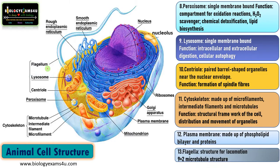The final structure is the flagellum. In many eukaryotic cells — often single-celled eukaryotes — a flagellum is used for movement. It is a structure meant for locomotion and has a 9+2 microtubule organization. Notably, flagellum, lysosome, and centriole are often absent in plant cells.